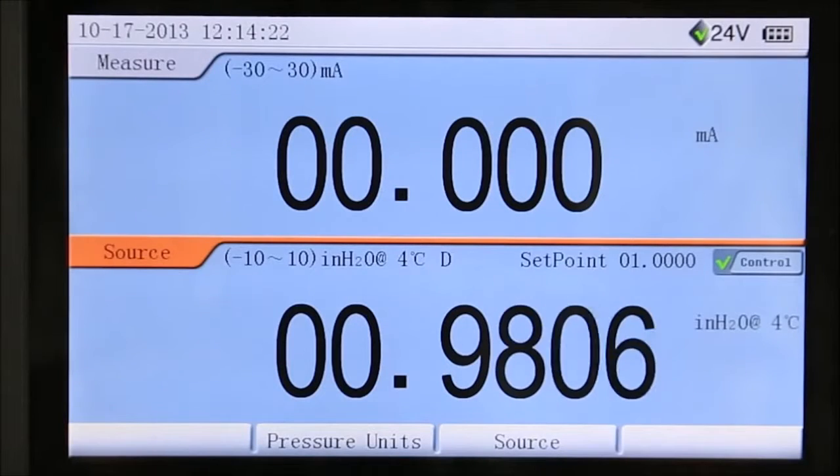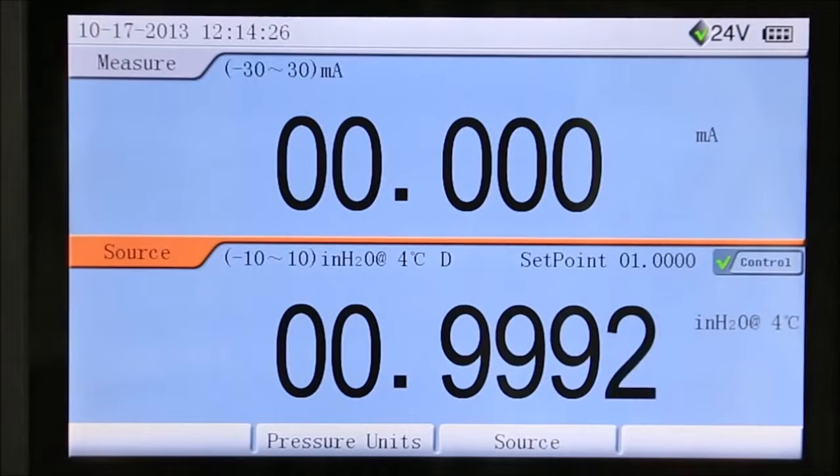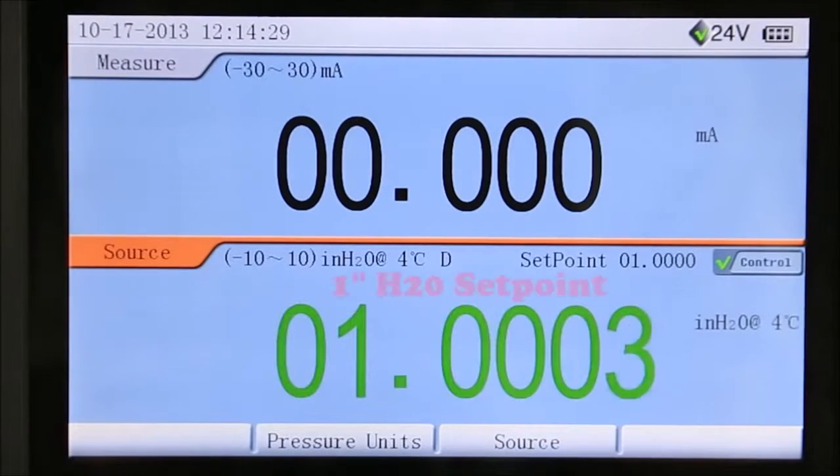The low pressure model 761-LLP has internal ranges of 1 and 10 inches of water, ideal for testing draft range and HVAC sensors. Control precision is better than 1 ten-thousandth of an inch of water.